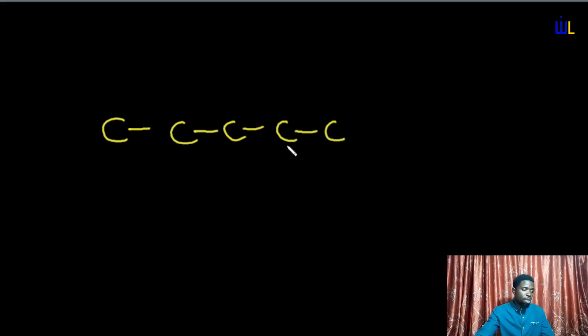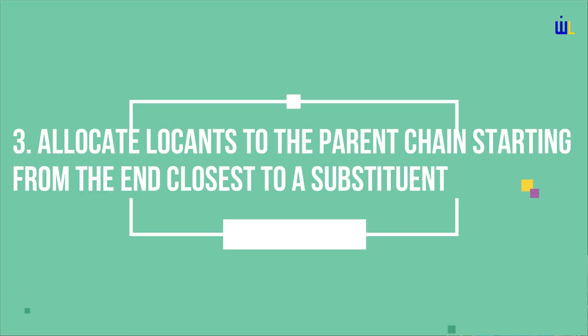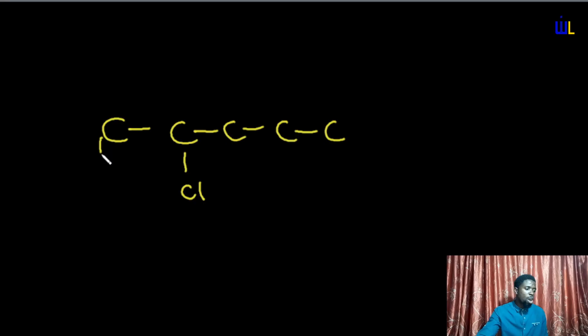Let's try another example. Imagine a chain of five carbons with a chloro substituent. If we start from the far end, we count one, two, three, four before reaching the substituent. But if we start from the closer end, we count one and on the second carbon we reach the substituent. So we allocate locants starting from that closer end: one, two, three, four, five.